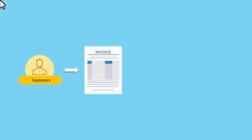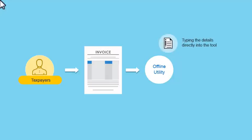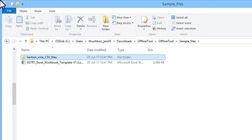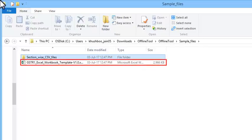Taxpayers can feed invoice data in the returns offline utility either by typing the details directly into the tool, or by entering them into the GST-provided Excel or CSV templates and then importing those templates in the tool. This video will show you the steps of using this Excel template, followed by importing line items in the offline utility and then uploading it to the GST portal.